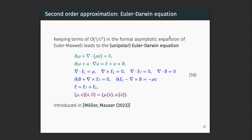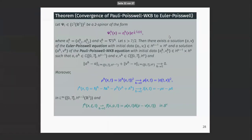The theorem: you assume regular initial data — to control several Sobolev embeddings — and then you straightforwardly get a local strong solution in time and pass to the limit in the appropriate norms, obtaining convergence of the Wigner transform to a monokinetic Wigner measure. This is joint work with Norbert Mauser and Chung-Hay Yang.